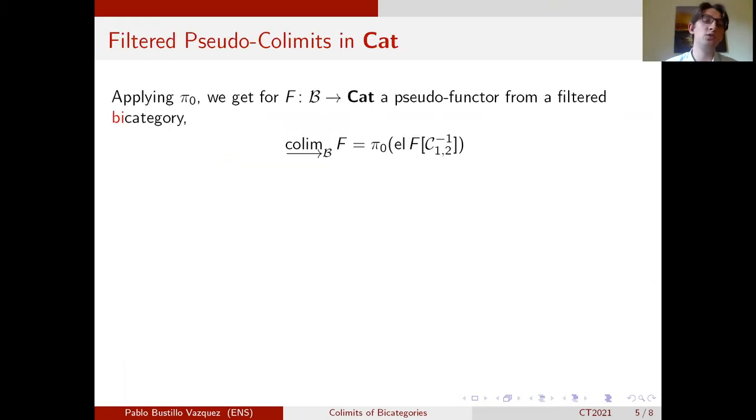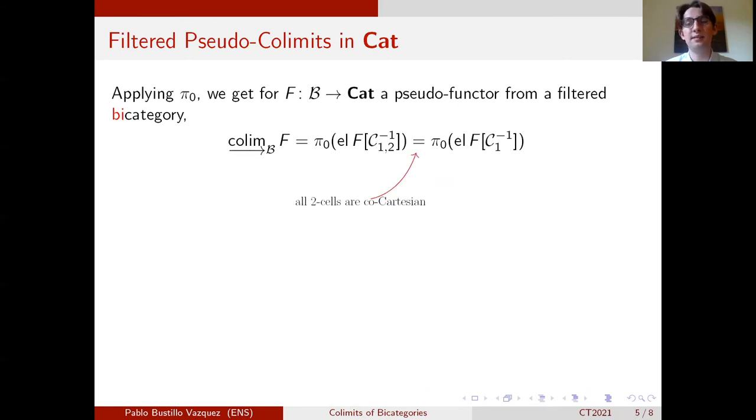One first very efficient way to ditch these requirements is to get a discrete diagram, so only working with categories that don't have two cells. And so we take a filtered bicategory B and a pseudofunctor from B to cats and we can immediately express the colimit of f with the previous formula by applying pi zero.